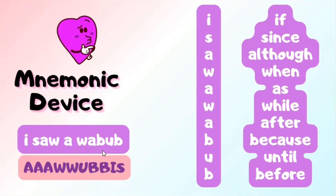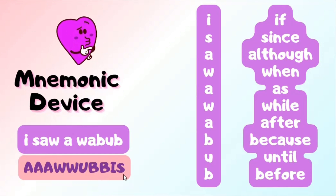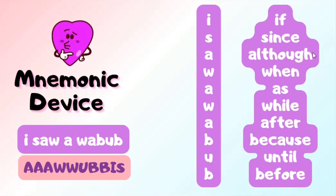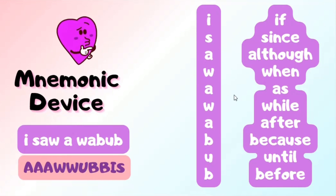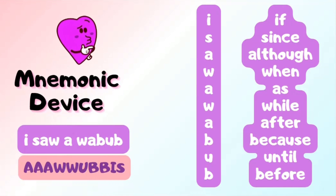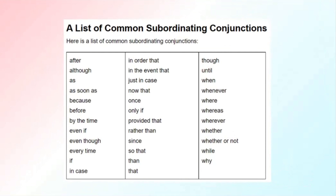Let's move on to the mnemonic device — 'I SAW A WEB.' Write it vertically and it gives you the most commonly used subordinating conjunctions: I for 'if,' S for 'since,' A for 'although,' W for 'when,' A for 'as,' W for 'while,' then 'after,' 'because,' 'until,' 'before.' These are the most commonly used subordinating conjunctions, but there are many more. You can take a screenshot of the full list and save it in your notes.